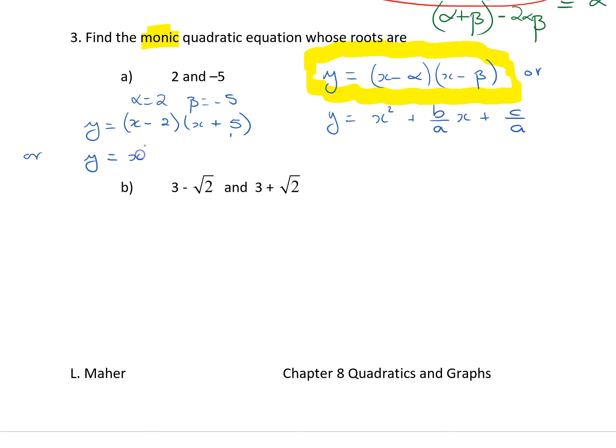You should get x squared minus b on a, oh, we actually, no, we'll have to expand it out. So, x squared minus 2x plus 5x minus 10, we get y is equal to x squared plus 3x minus 10.